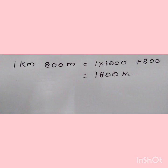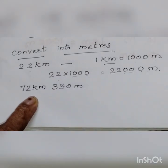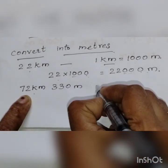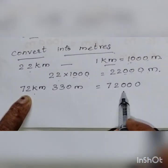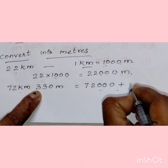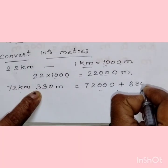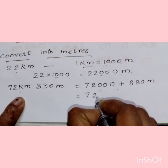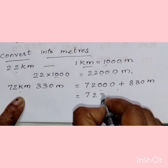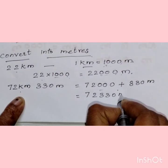After converting and adding the meters, the next question is 72 kilometers 330 meters. To convert kilometers to meters, multiply by 1000 — so we add three zeros after 72 to get 72,000, then add 330. The result is 72,330 meters.